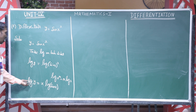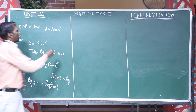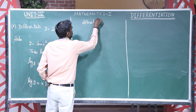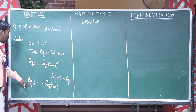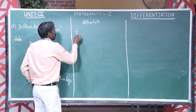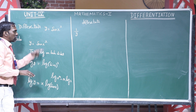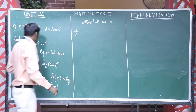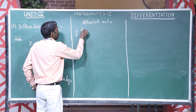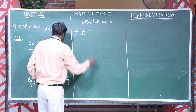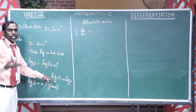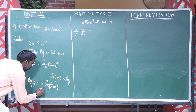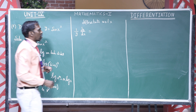Now we have two separate functions on the right-hand side: x and log sin x. We differentiate both sides with respect to x. The differentiation of log y gives 1 by y into dy by dx. On the right-hand side, since we have x into log sin x — two functions multiplied — we use the product rule: u v dash plus v u dash.